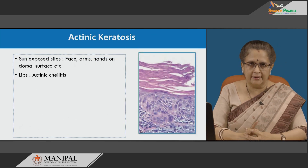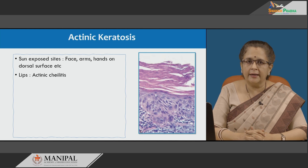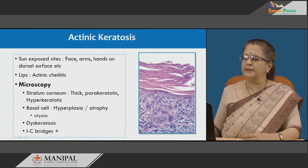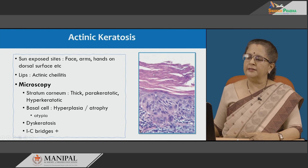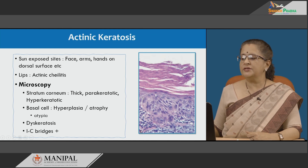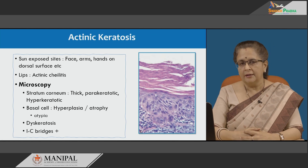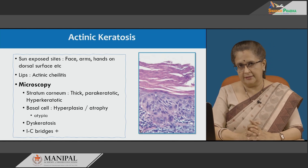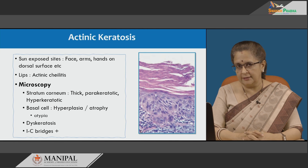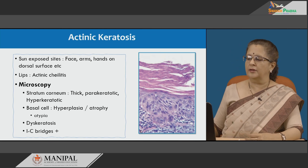It affects sun-exposed sites, specifically the face, arms and hands especially the dorsal aspect, and can affect the lips, where it is known as actinic cheilitis. Microscopically, there is a markedly thickened stratum corneum — hyperkeratotic with retention of nuclei — making it parakeratotic as well. The rest of the epidermis may show basal cell hyperplasia or atrophy with thinning of the stratum spinosum. Atypical cells are initially restricted to the basal layer with enlarged, hyperchromatic nuclei, and later progress to involve the full thickness.